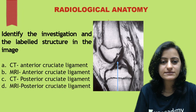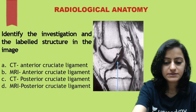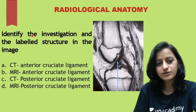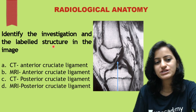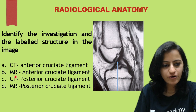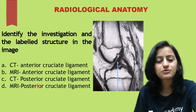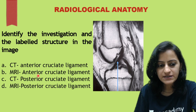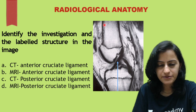Hello everyone, let's learn knee MRI anatomy — important anatomy here. The question is: identify the investigation and the labeled structure, whether it is CT or MRI, and whether it is the anterior or posterior cruciate ligament. First, let us identify whether this is CT or MRI.